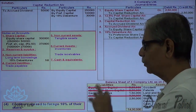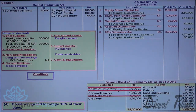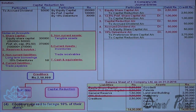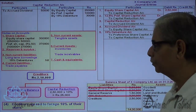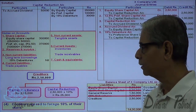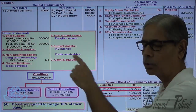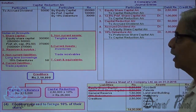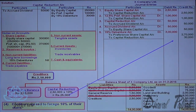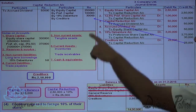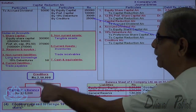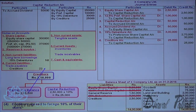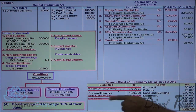Next, creditors agreed to forego 10% of the dues. Creditors are Rs. 2 lakhs 50,000; 10% foregone is Rs. 25,000 — a decrease in liabilities credited to capital reduction account. Remaining creditors are Rs. 2 lakhs 25,000, which will appear in the balance sheet under trade payables. Journal entry: Creditors Account debit Rs. 25,000, to Capital Reduction Account credit Rs. 25,000. Creditors will appear in trade payables at Rs. 2 lakhs 25,000. This point is complete.